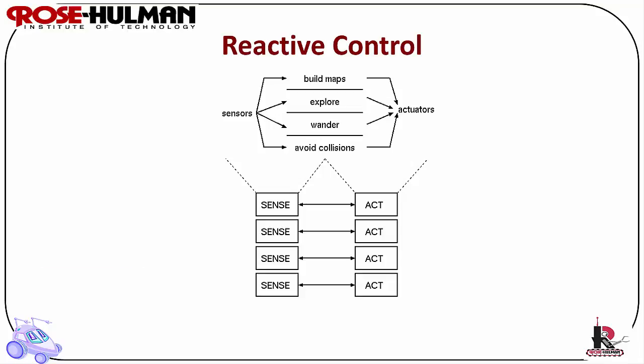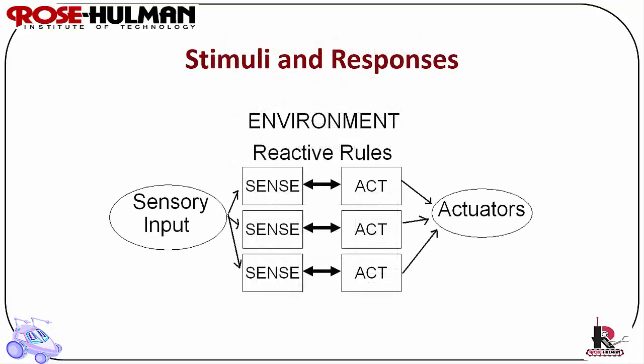Reactive control is more similar to biological systems, which are based on stimuli and responses. The robot system has a set of situations, stimuli, or coordinations, and a set of actions, responses, or behaviors. The situations may be based on sensory inputs or an internal state.